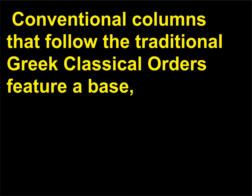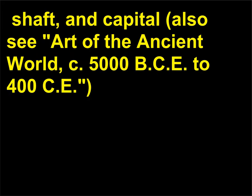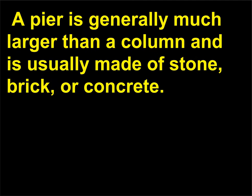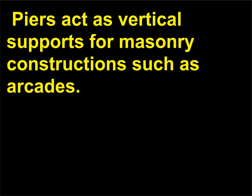Conventional columns that follow the traditional Greek classical orders feature a base, shaft, and capital. A pier is generally much larger than a column and is usually made of stone, brick, or concrete. Piers act as vertical supports for masonry constructions such as arcades.